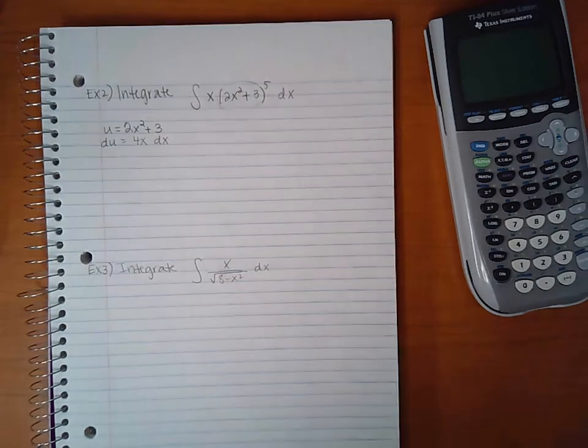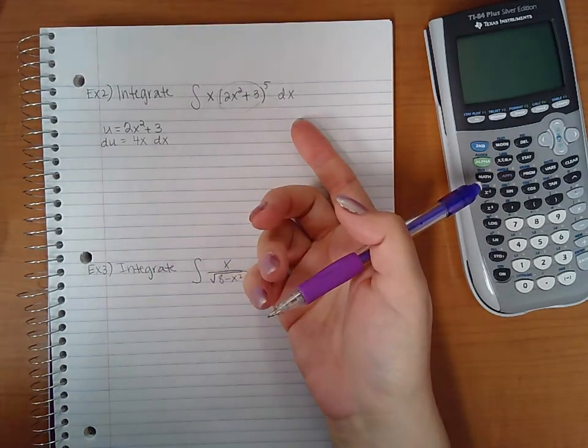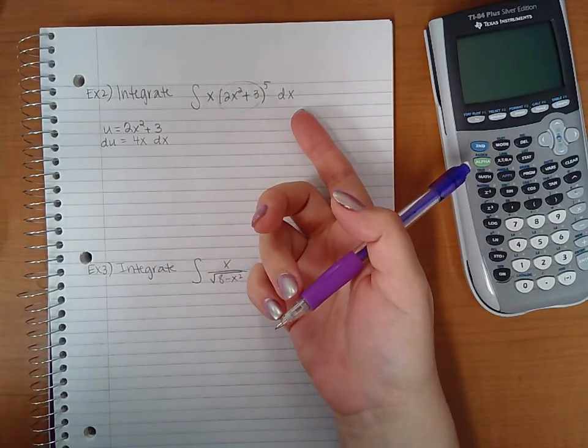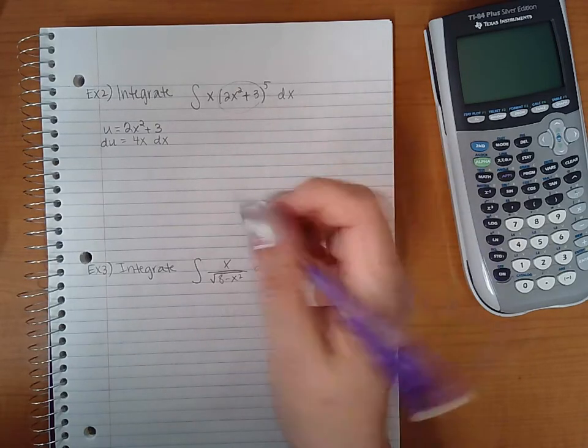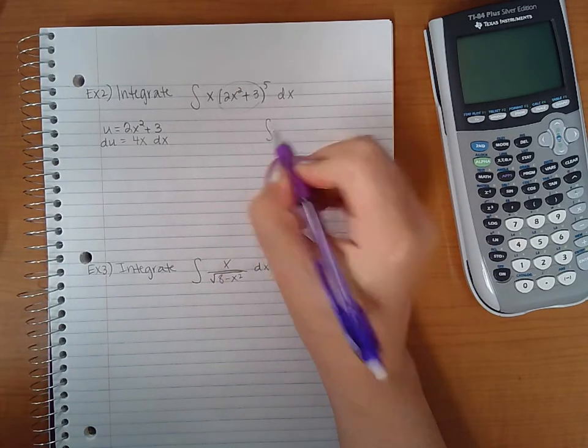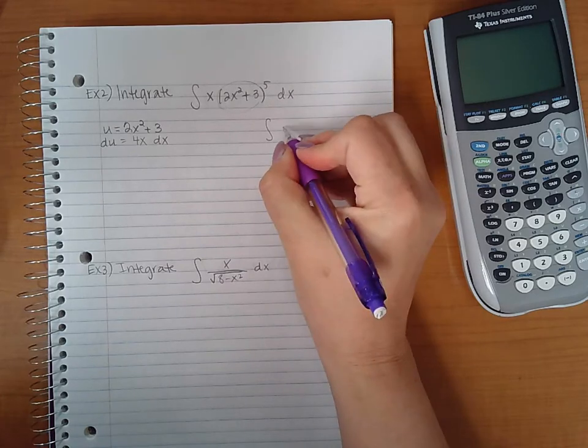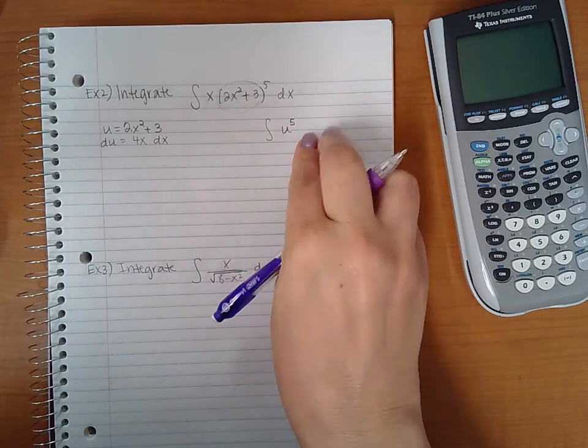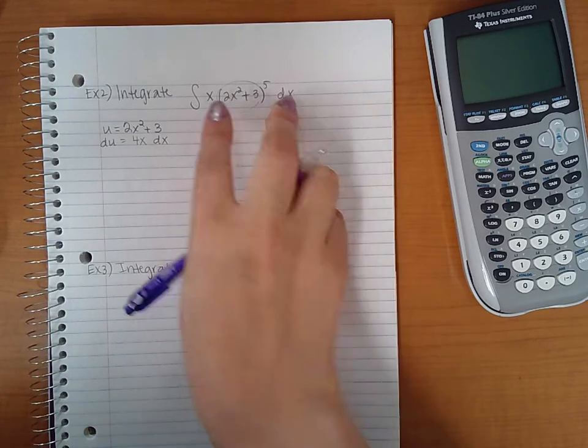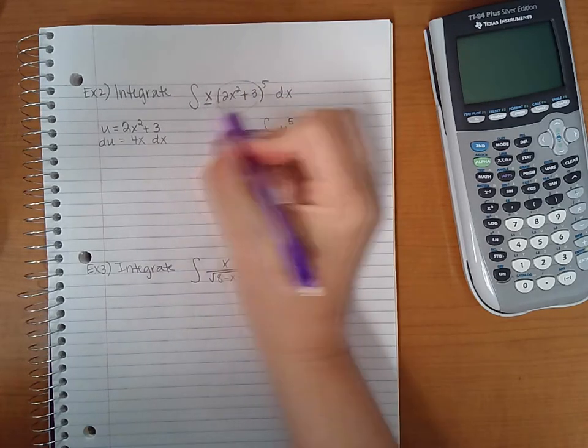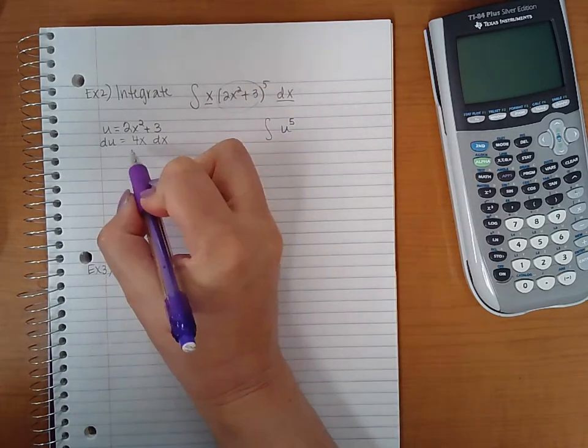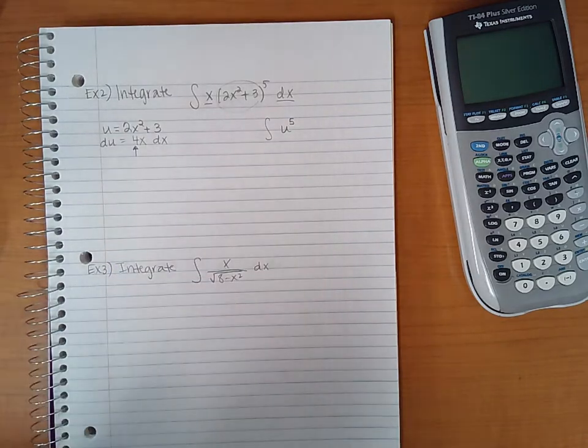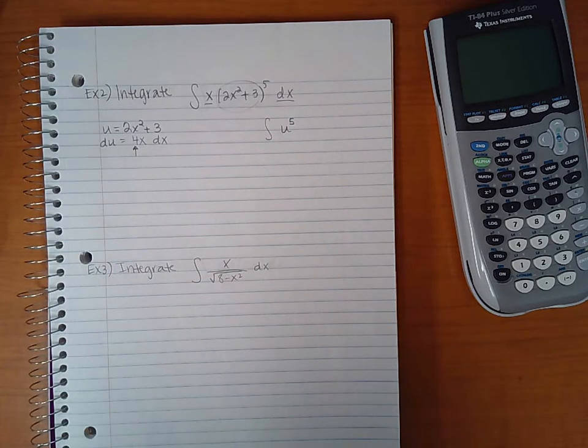Now what I want to do is substitute 4x dx in here. However, you notice when I want to do this, this part's going to become the u. So I'm going to have u to the fifth. And then this part should become something with du. But if you notice, I have x and dx. I do not have this 4 in front here.